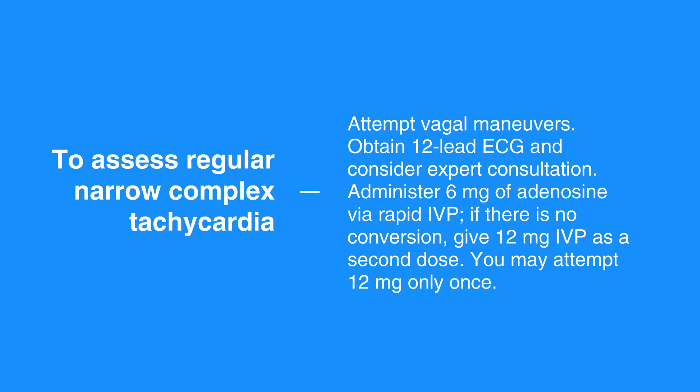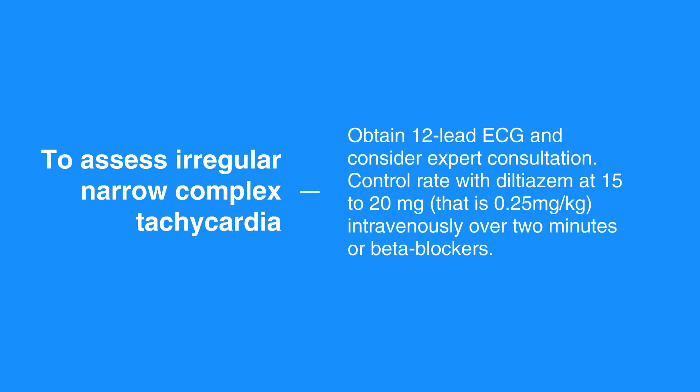To assess irregular narrow complex tachycardia, or probable AFib, obtain a 12-lead ECG and consider expert consultation. Control rate with diltiazem at 15–20 mg, that is, 0.25 mg per kg, intravenously over 2 minutes, or beta blockers.